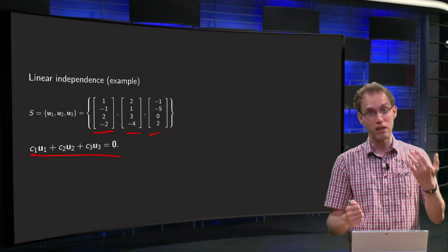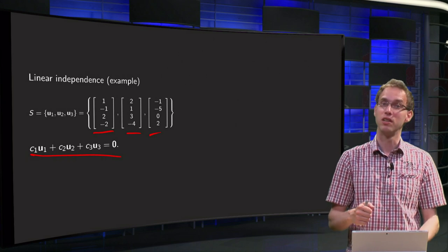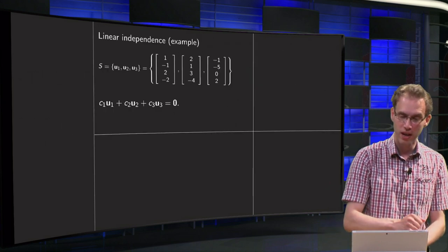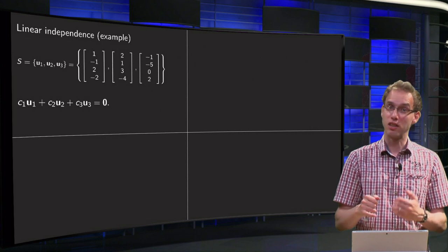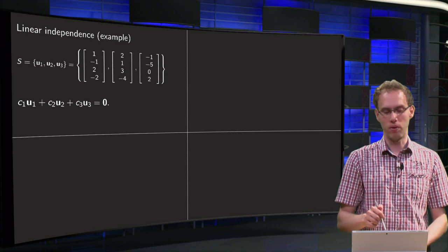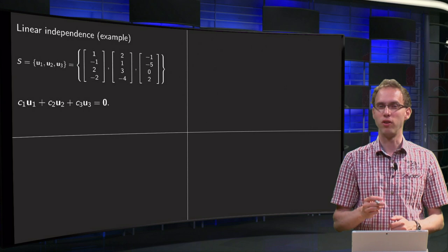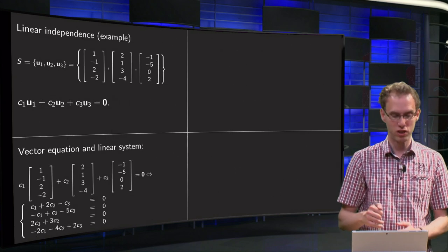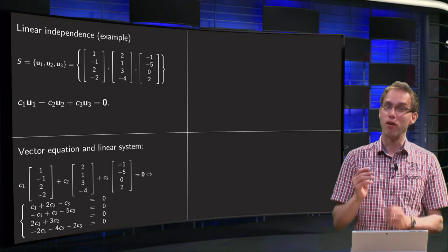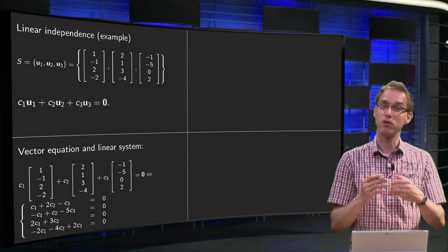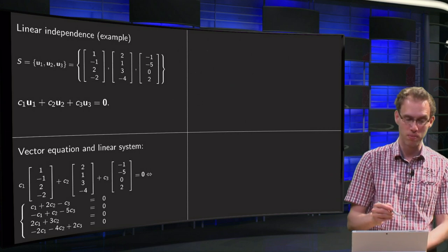then your set is dependent. If you find only the trivial solution, the set is independent. So let's try to solve this vector equation. We can of course plug in u1, u2, and u3, but then still, how can we see what the solutions are? Well, fortunately we know how to do that because we can convert our vector equation into a linear system.